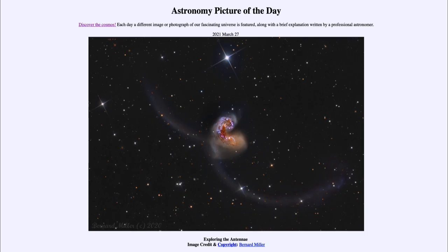So what do we see here? Well, this is a pair of galaxies often known as the Antennae galaxies. They're also known by their catalog designations, NGC 4038 and NGC 4039.